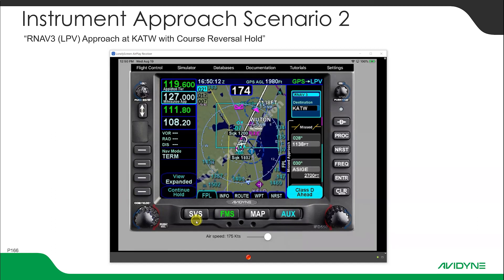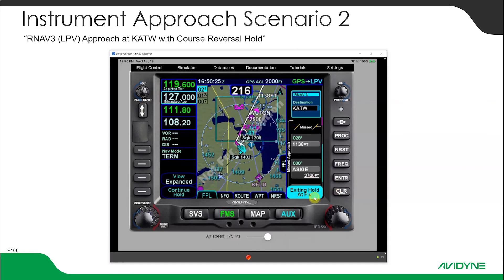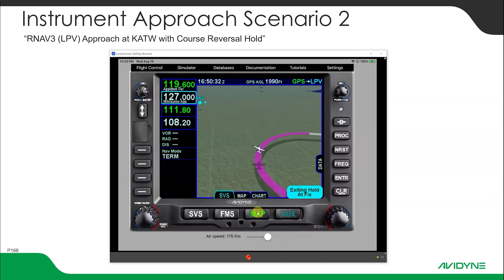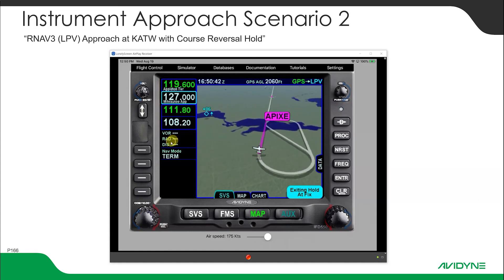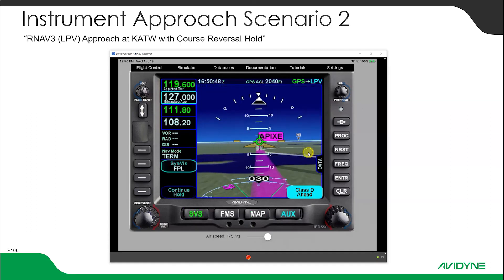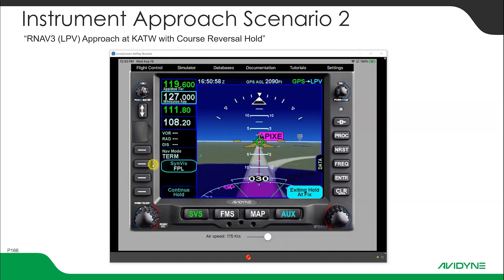If ATC came on and told us to hold, we could push the line select key number one to stay in the hold. Otherwise, the FMS knows we're going to exit at the fix. Over on the map you can see us off the map there, but switching to the 3D view now. We're going to turn inbound as soon as we cross Apixi again — this will switch to LPV and approach mode. Going back to the first person SVS view, this is where the lateral and vertical deviation indicators will pop back in, and we'll go to LPV as our nav source with approach mode.